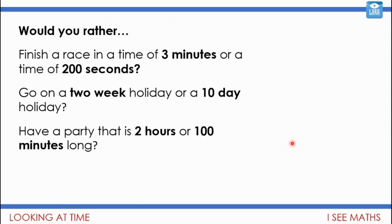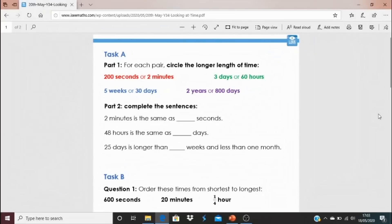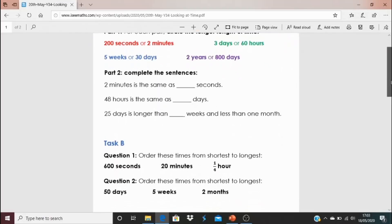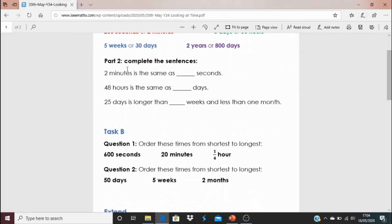For today's task, click on the blue link underneath the video. For task A, have a look at part one. For each of these pairs in each different color, circle the longer length of time. Which of these two red ones is the longer length? Which of the two green ones is the longer length of time? How do you know?